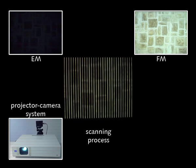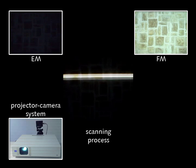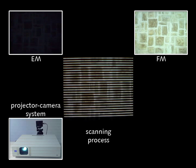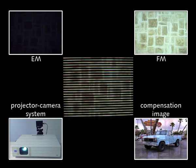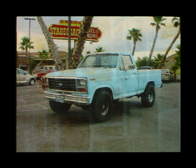By applying a pixel-precise mapping between both devices, this radiometric information can be used to calculate a compensation image with modulated intensities and colours. When projecting this image instead of the original one, the underlying surface is neutralised from the position of the camera.